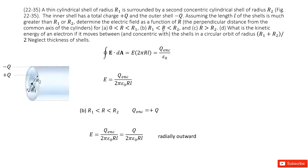Next, consider when R is larger than R1 and smaller than R2 — between the two shells. We draw a Gaussian surface in this region. The electric field times the Gaussian surface area equals the enclosed charge divided by epsilon naught. Now, looking at this Gaussian surface, there is charge enclosed: positive Q, located at the inner surface. So we replace Q enclosed with Q and solve for the electric field, which points radially outward.